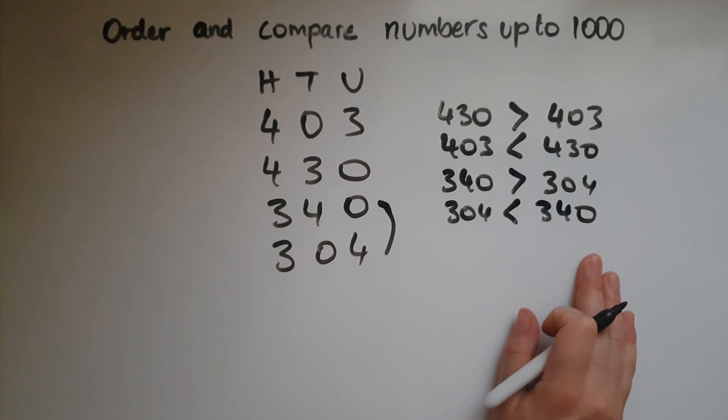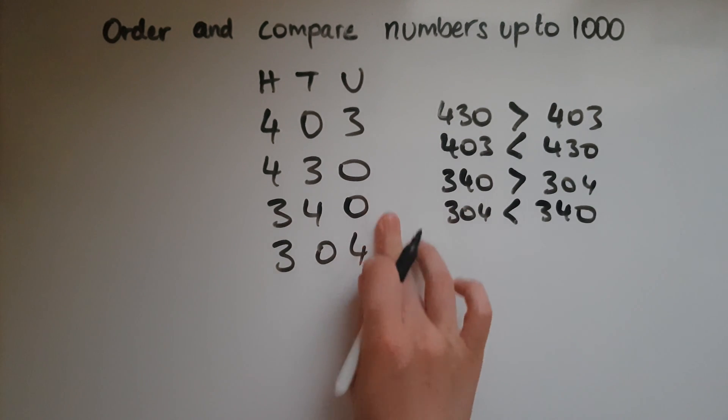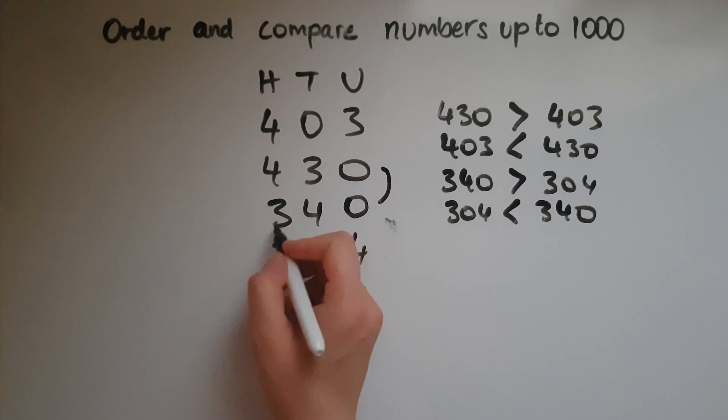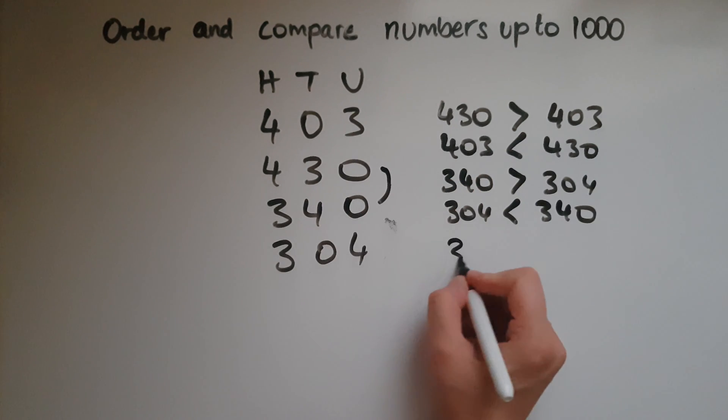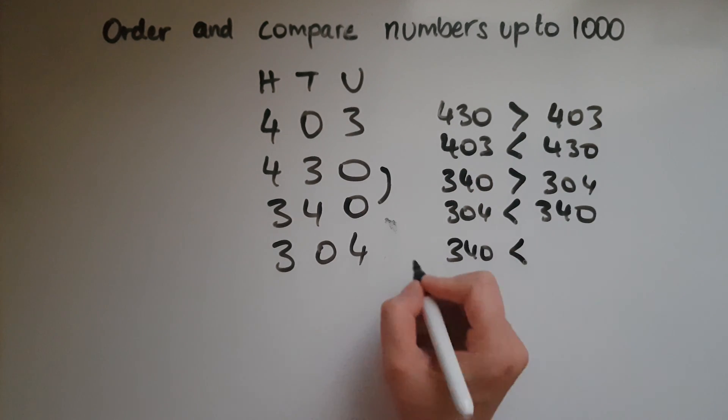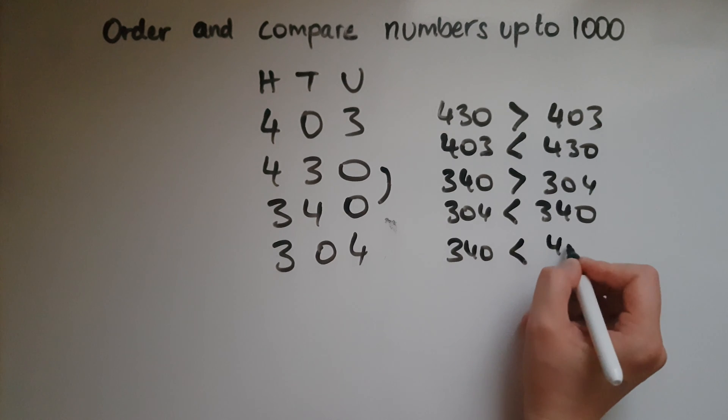That's how you compare numbers. You could compare these two for example: 340 is smaller than 430.